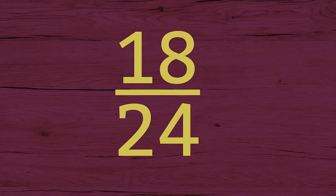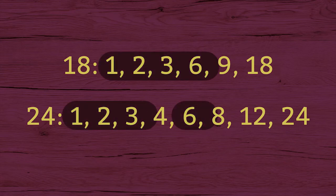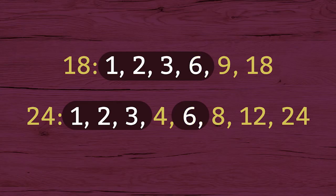What is the simplest form of 18 24ths? First, find the factors of the two numbers. Then, look for the common factors. 1, 2, 3, and 6 are common factors of 18 and 24. The greatest common factor is 6.